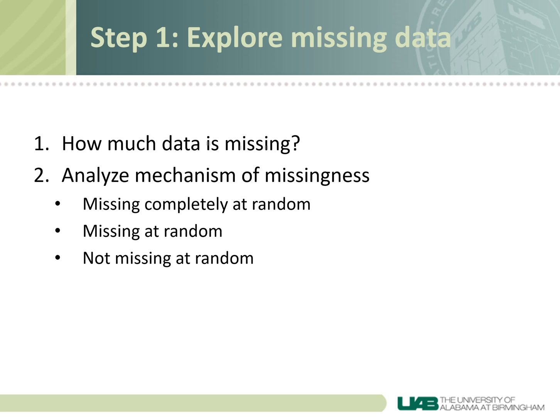If you find your data are not missing completely at random — in this case for the Little's MCAR test the p-value would be significant at 0.05 or less — then think about discussing the implications of that with a statistician before performing any imputation methods, because it can be difficult to deal with data that's not missing at random. Hopefully you'll find that your data is just missing at random, which is one of the more common findings.